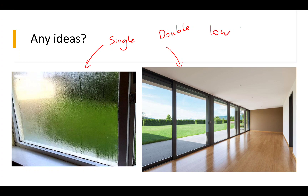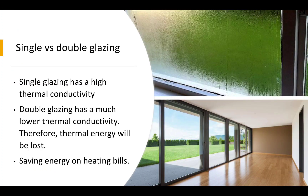Double glazing has a low thermal conductivity. Nowadays we use double glazing windows because they keep the thermal energy inside the building. To consolidate: single glazing has a high thermal conductivity, double glazing has a much lower thermal conductivity, therefore less thermal energy will be lost. Therefore we would save energy on heating bills, which is obviously a good thing, especially if you're paying the bill.